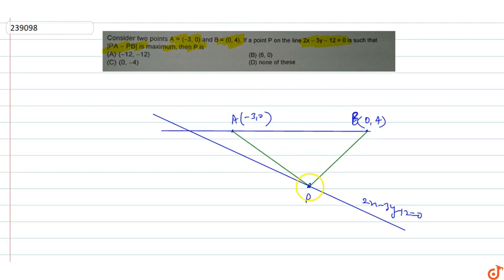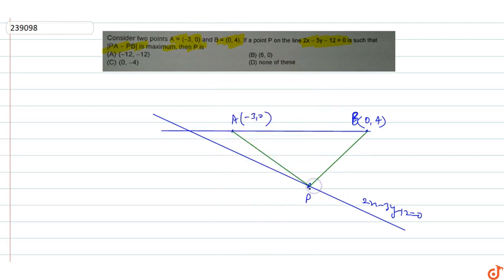The maximum will occur when point P is at the intersection of these two lines — the line AB and the line 2x minus 3y minus 12 equal to zero. At that intersection point, PA minus PB will be maximum.